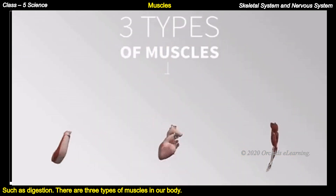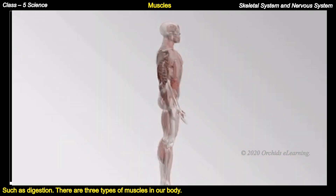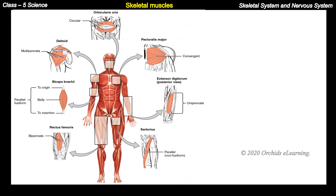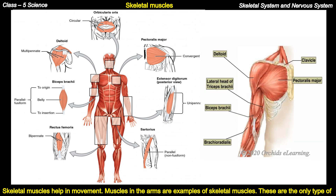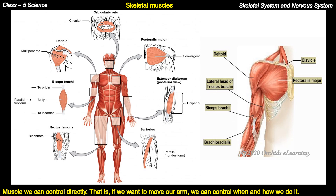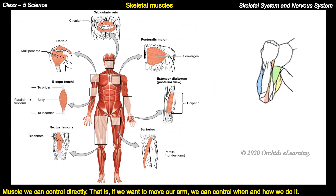There are three types of muscles in our body. Skeletal muscles help in movement — muscles in the arms are examples of skeletal muscles. These are the only type of muscle we can control directly. If we want to move our arm, we can control when and how we do it.